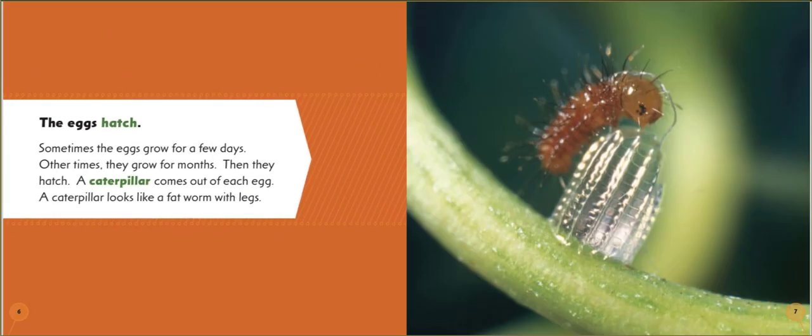The eggs hatch. Sometimes the eggs grow for a few days. Other times they grow for months. Then they hatch. A caterpillar comes out of each egg. The caterpillar looks like a fat worm with legs.